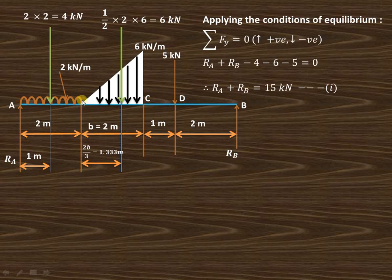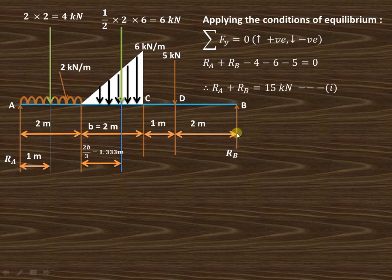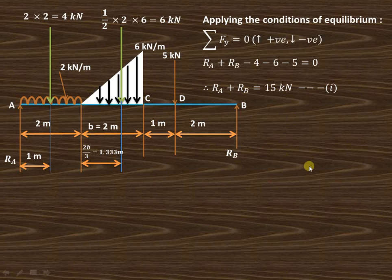We have now converted the UDL and UVL into point loads, making it easy to find beam reactions. Applying the first condition of equilibrium — summation of forces in the y direction equals 0 — considering upward forces as positive and downward as negative: RA plus RB minus 4 minus 6 minus 5 equals 0, which gives RA plus RB equals 15 kilo newton.